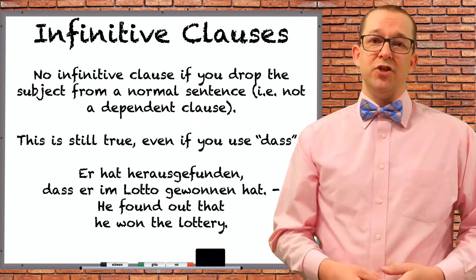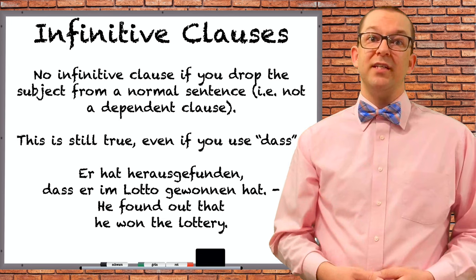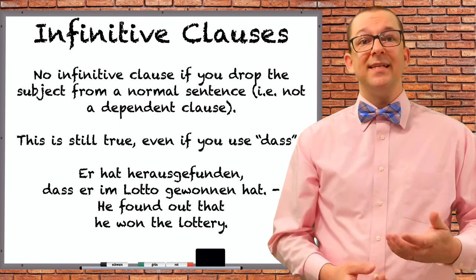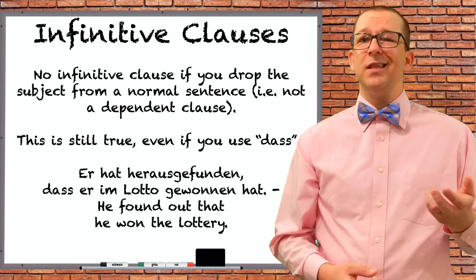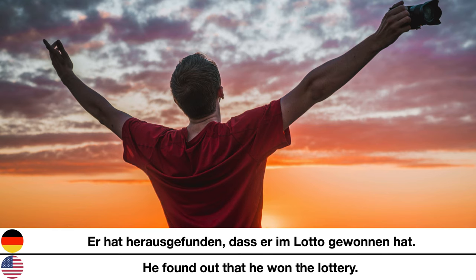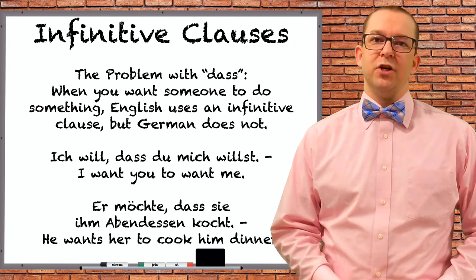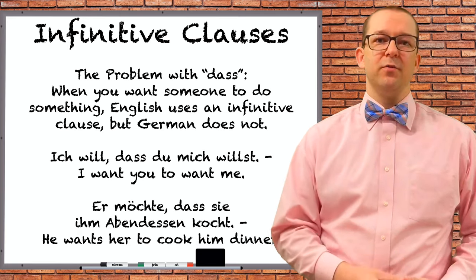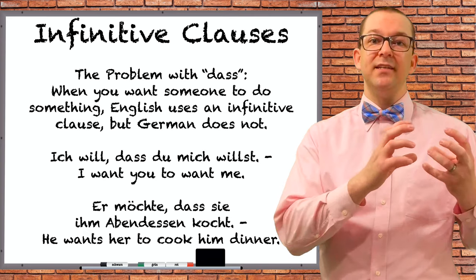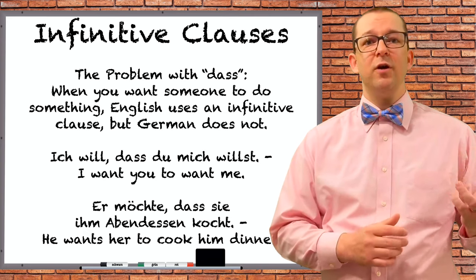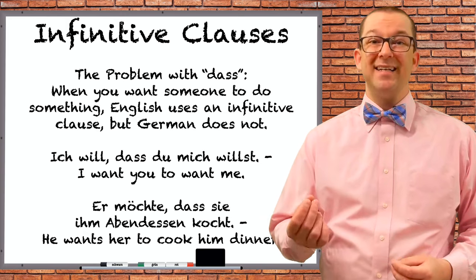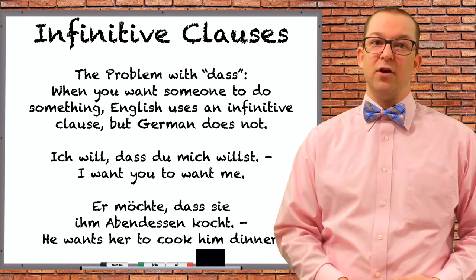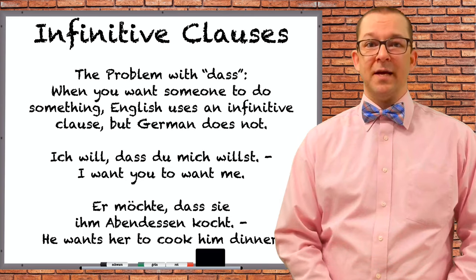This includes examples using the conjunction 'dass', which is sometimes tricky for German learners. 'Dass' is generally translated as 'that', but this logic doesn't always work out. Er hat herausgefunden, dass er im Lotto gewonnen hat — He found out that he won the lottery. The confusion with this conjunction occurs when you want someone to do something. In English, the action you want the other person to do is contained within an infinitive clause using 'to'. In German, you simply use the conjunction 'dass' and you don't need the infinitive clause.